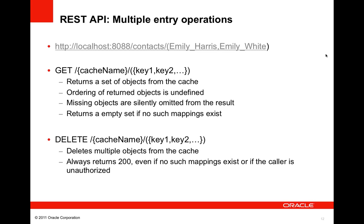In addition to single entry operations, the Coherence REST API includes support for bulk operations that access or delete multiple entries at once. The URLs are similar to single entry URLs but include one or more keys within parentheses, separated by commas. A client performs an HTTP GET to retrieve multiple objects in JSON or XML form — note that ordering of returned objects is undefined and missing objects are silently removed. To delete multiple objects, a client performs an HTTP DELETE, which always returns HTTP 200 even if no mapping exists or the caller is unauthorized.